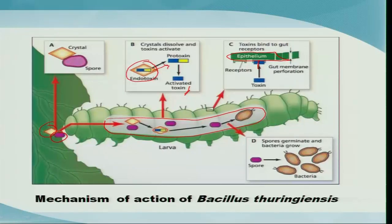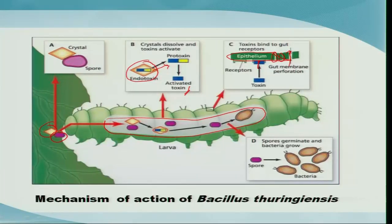Once the toxin binds, it causes pores or perforations in the epithelial cells, through which the bacterium enters. It then kills the insect cells by septicemia. After killing the host cells, the bacteria multiply and produce in large numbers and are then released.